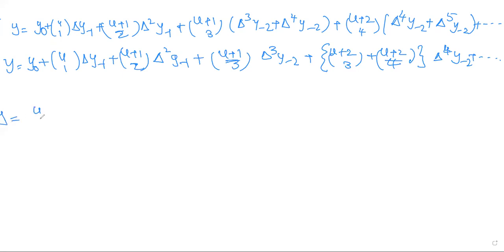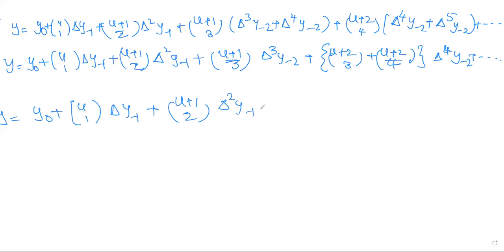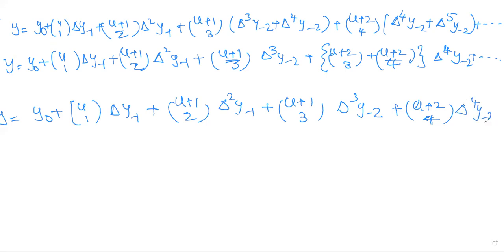Therefore, we can write: y = y0 + u(1) · Δy₋₁ + (u+1)(2) · Δ²y₋₁ + (u+1)(3) · Δ³y₋₂ + (u+2)(4) · Δ⁴y₋₂ + etc. This is the Gauss Backward Difference Formula, now proven.